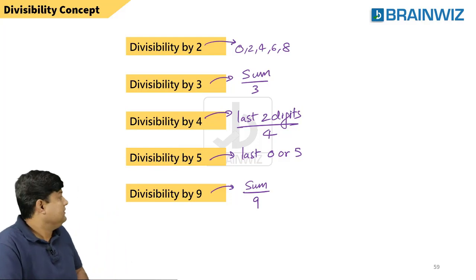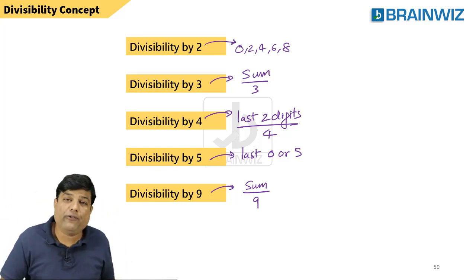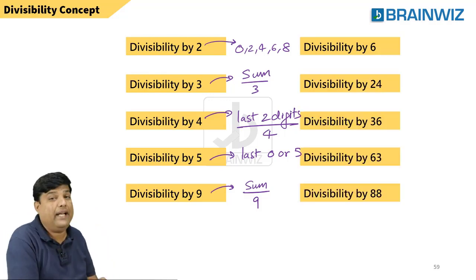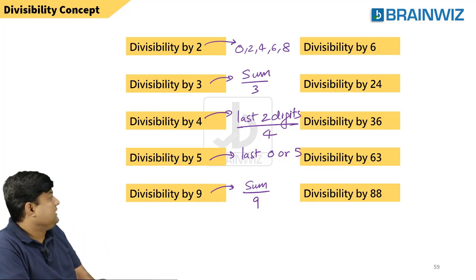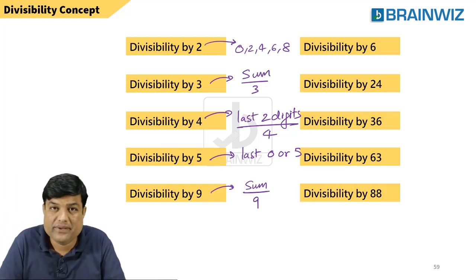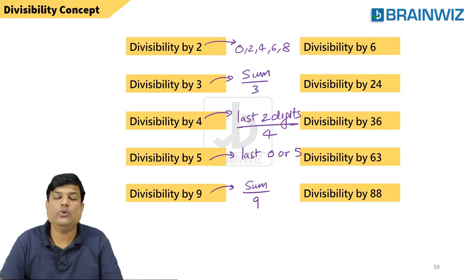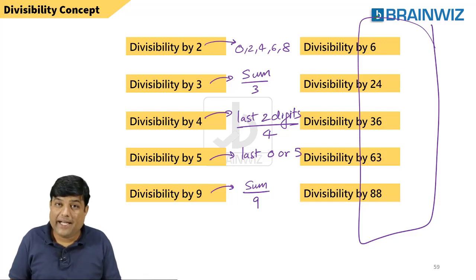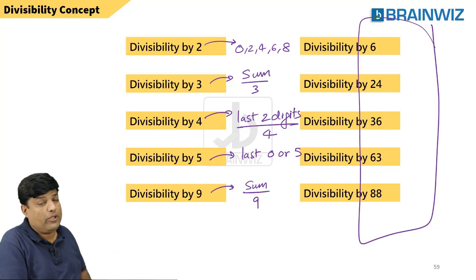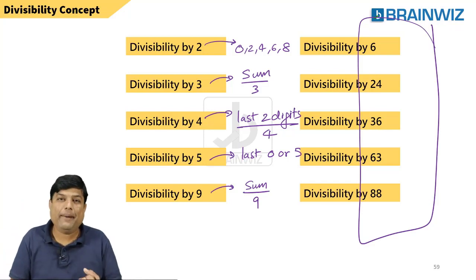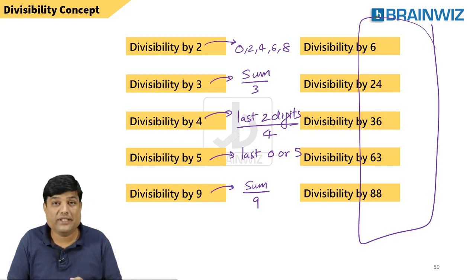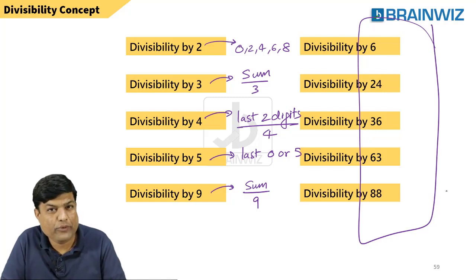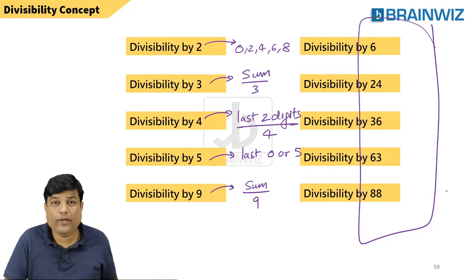For divisibility of 9, the sum must be divisible by 9. These are the basics. But if you have to find divisibility of bigger numbers like 6, 24, 36, 63, and 88, you should know their co-primes. In this video, you will be learning divisibility of higher numbers — very important for AMCAT, ELITMUS, and Cognizant. I will also teach you one TCS question from 2020. Let's move forward.